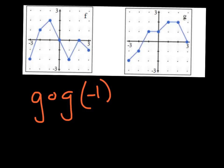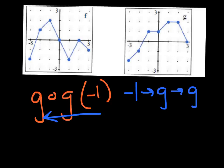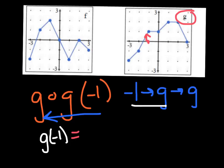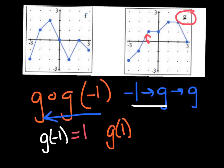Let's do one last one with the graphs. This says g of g of negative 1. Working backwards: negative 1 goes into g, take that output, and plug it back into g. Finding g of negative 1: go to the g graph, find x = −1, the height is positive 1. Now taking that output of 1 and plugging it back into g: finding g of 1 — go back to the g graph, find x = 1, and the height is an output of 2.